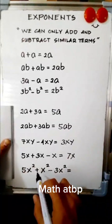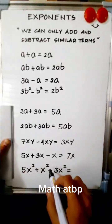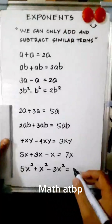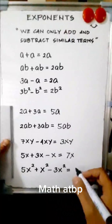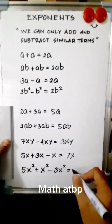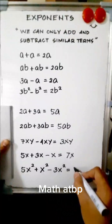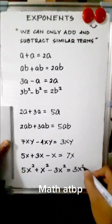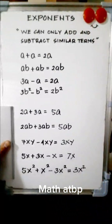5x squared plus x squared minus 3x squared — the answer is 3x squared.